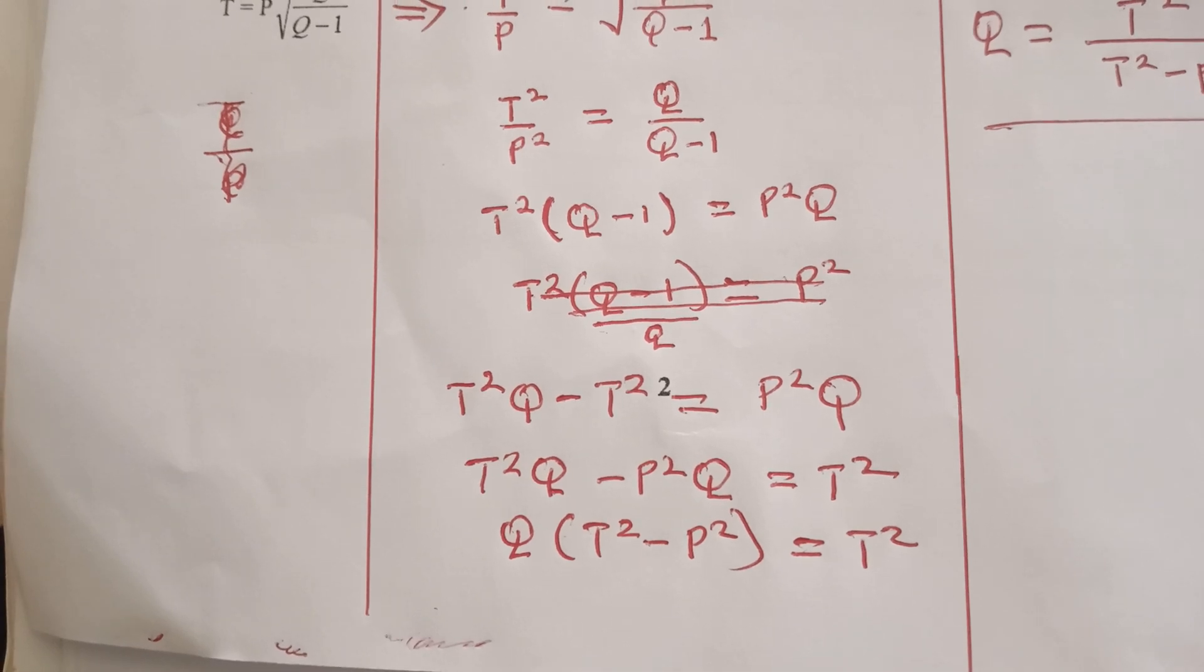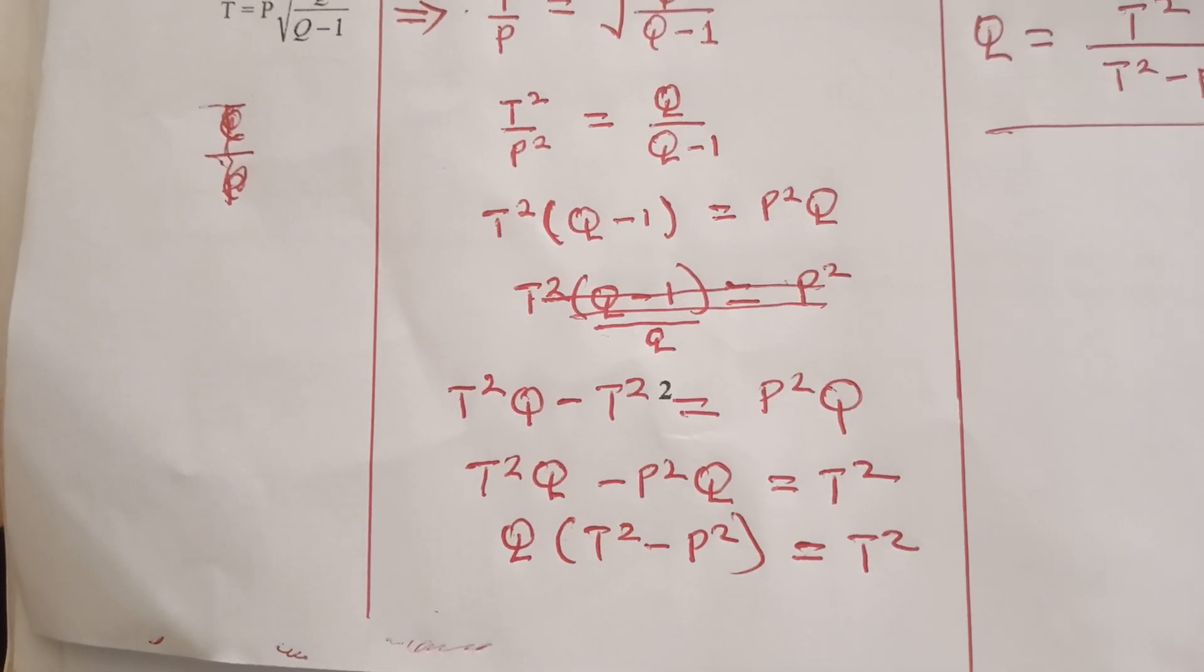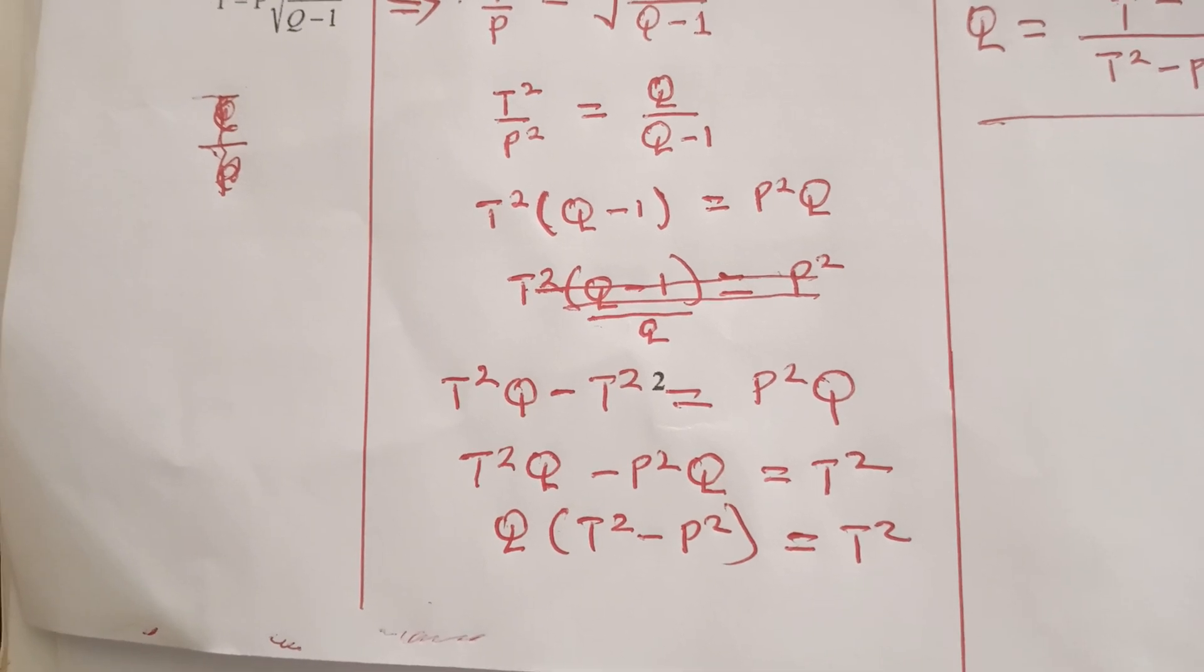We shall have T squared Q minus P squared Q, which is equal to T squared.